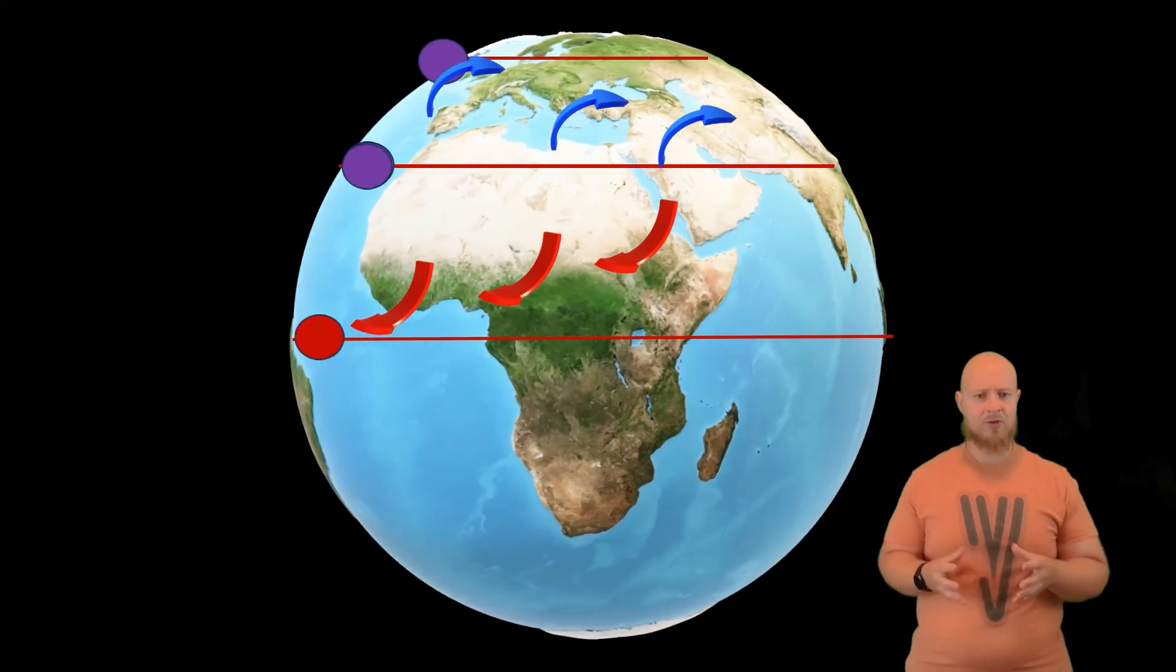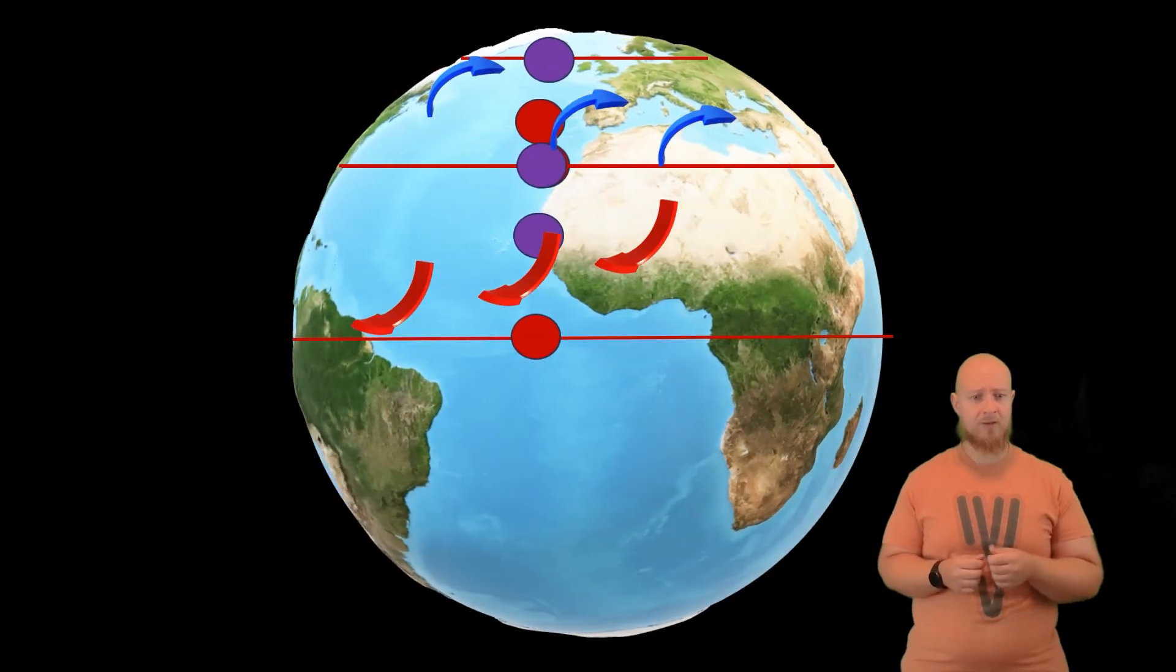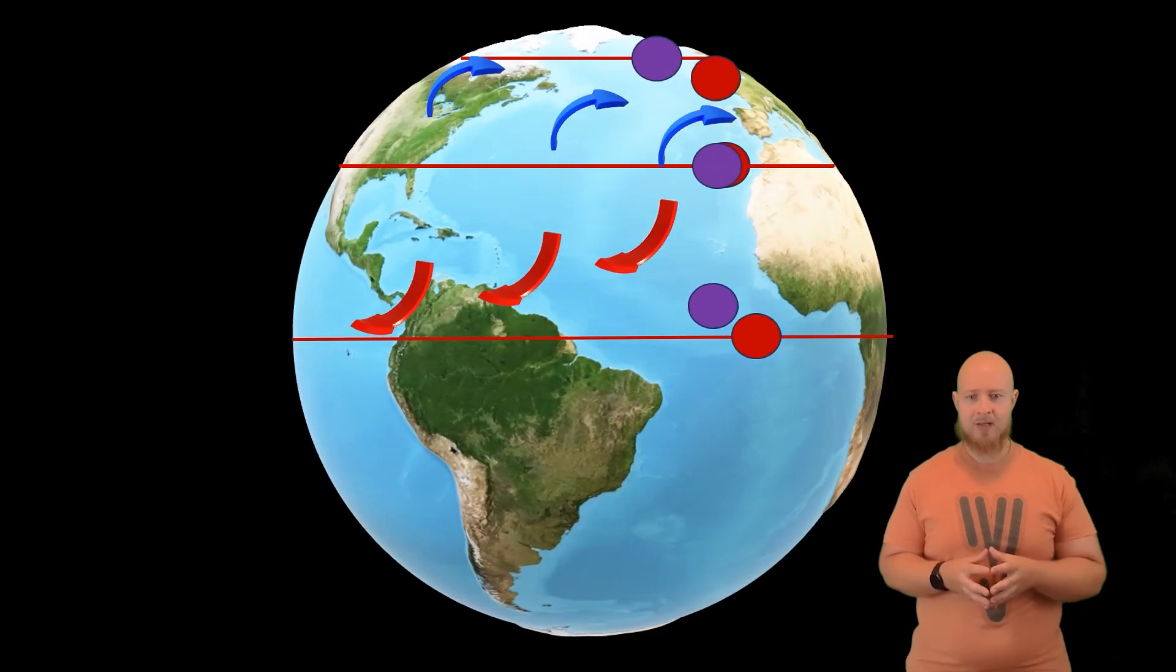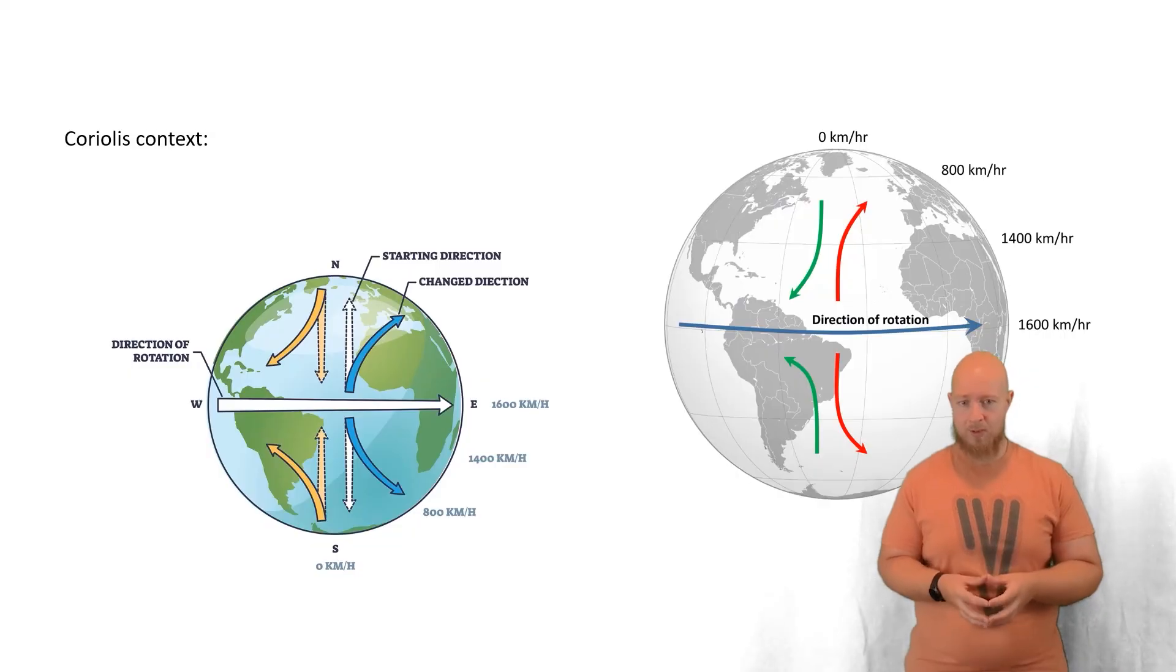Notice our arrows. From the direction of travel, the mass was deflected right. An air mass moving southwards towards the equator was also deflected right from its perspective.